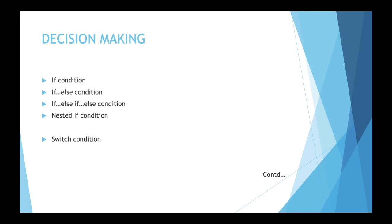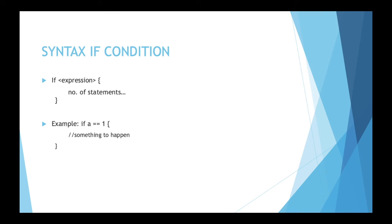Our next topic is decision making. In Swift we have if conditions and switch conditions. For the if condition we have multiple cases: only if, if-else, if-else-if-else, or nested if. The syntax is: 'if' keyword, space, then the expression, and within curly braces the statements. For example: 'if a == 1 { }' — whatever code is in the curly braces will execute when the condition is true.